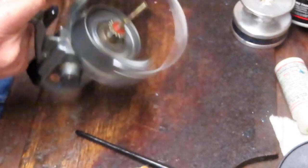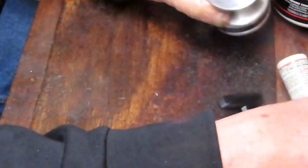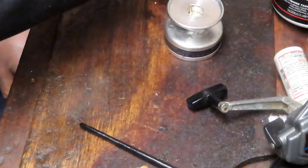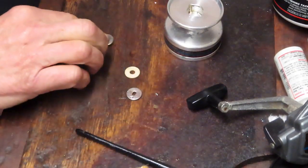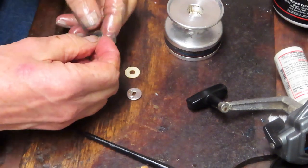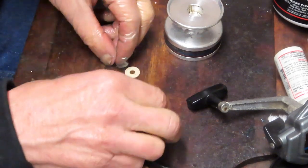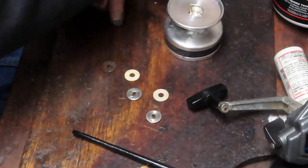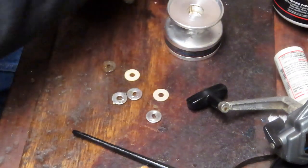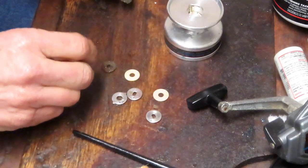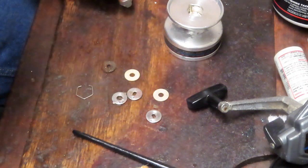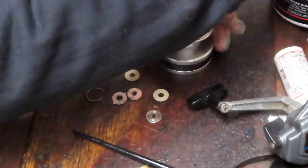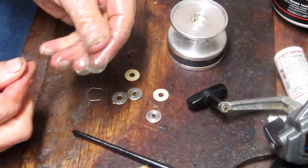What's not to like about that? Anti-reverse them all. Alright, we took the drag set out of here so that we can clean that. The drag set is a series of washers, both metal and fabric. There's two plastic washers.